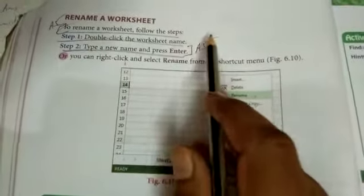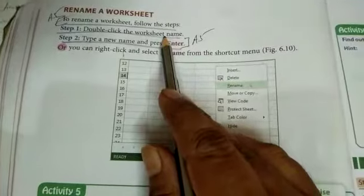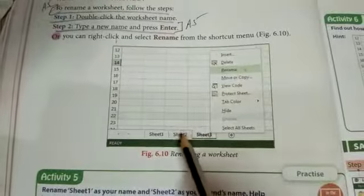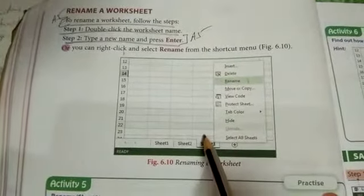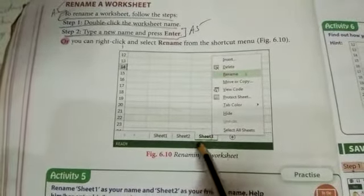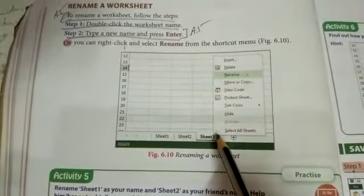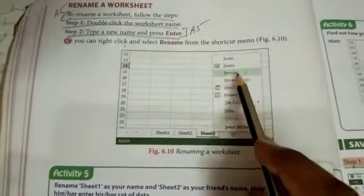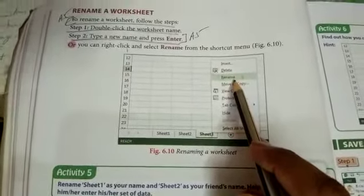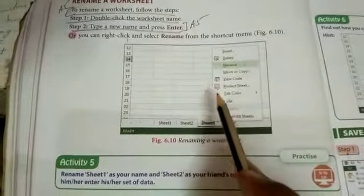To rename a worksheet, follow the steps: double-click the worksheet name on the sheet tab. Or you can give a right click, like they have shown in Sheet 3. They have given a right click and selected the rename option from the shortcut menu. After that, step 2, type a new name and press enter key.